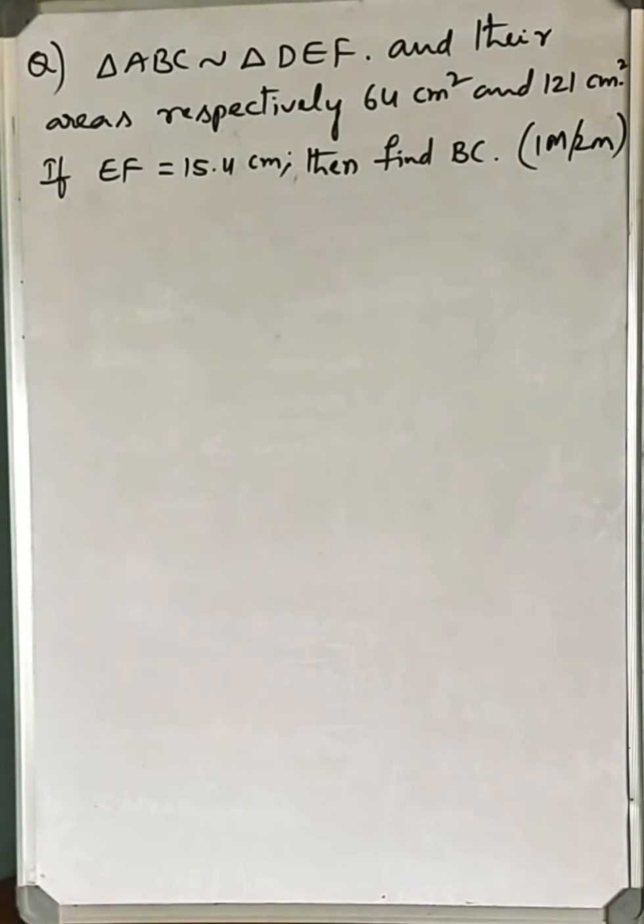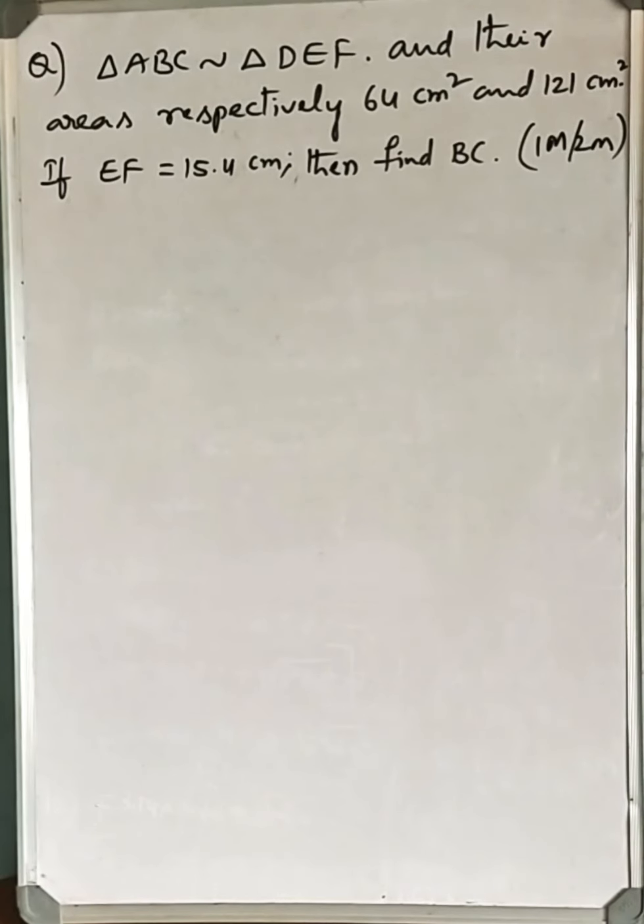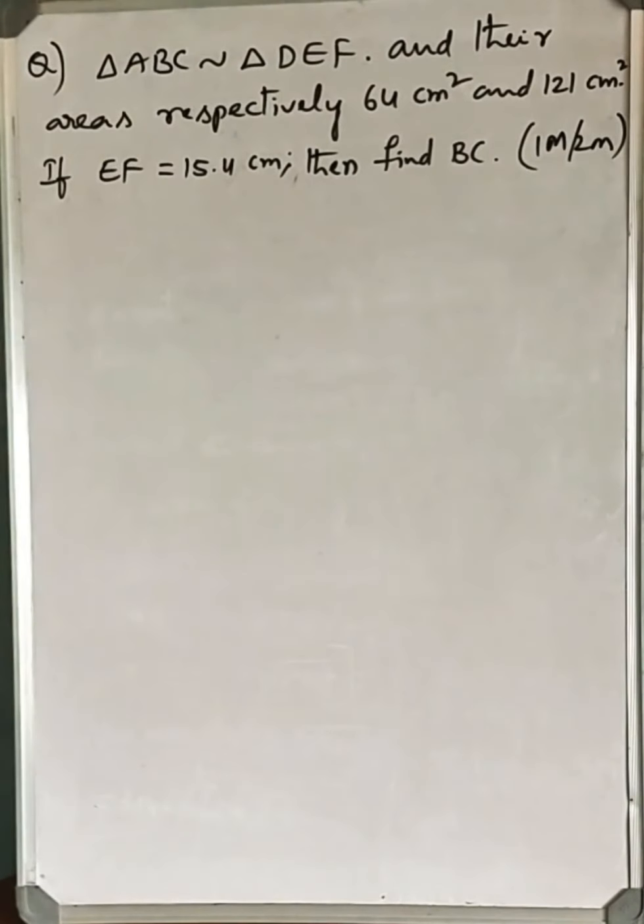The question is: triangle ABC is similar to triangle DEF, and their areas are respectively 64 square centimeters and 121 square centimeters. If EF is equal to 15.4 centimeters, then find BC.